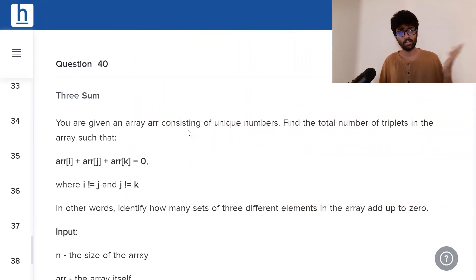3sum. It's a very simple problem. You are given an array consisting of unique numbers. Find the total number of triplets in that array such that Arr of i plus Arr of j plus Arr of k is 0. i is not equal to j, j is not equal to k. Simply put, you've got an array of n numbers. You've got to take 3 different numbers and add them up to get 0. How many such triplets are there in the array?